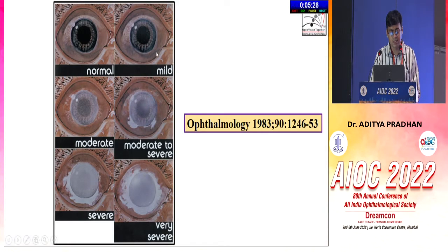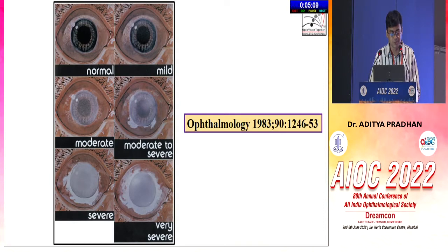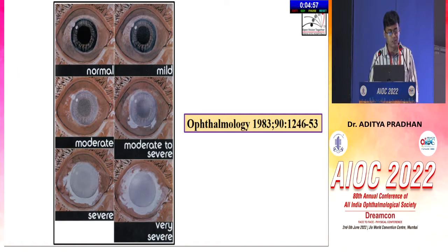The Feister classification came between Roper Hall and Dua, using photographic reference images compared to the patient's eye for grading: normal, mild, moderate, moderate to severe, and very severe - with complete blanching and total scleral ischemia at the severe end. However, this was not easily reproducible and quite subjective. Then we came to the current Dua classification with six grades, in which prognosis worsens from grade 1 to 6. You have clock hours of limbus involvement, percentage of conjunctival involvement, and an analog scale. Grade 6 is very poor, with total 12 clock hours of limbus involved and 100% conjunctival involvement.